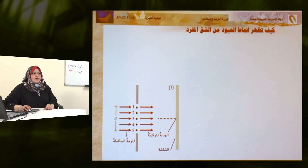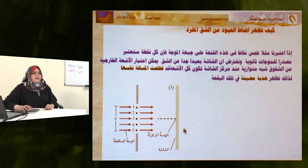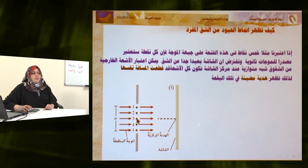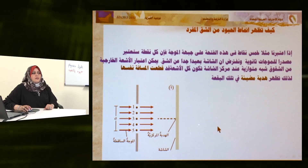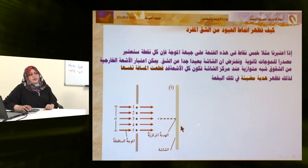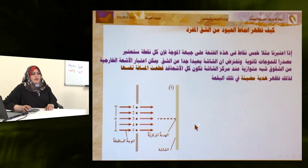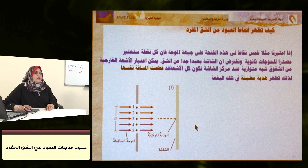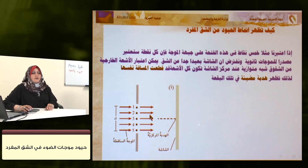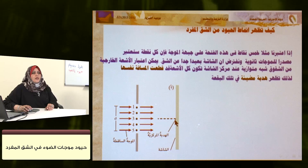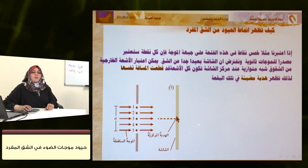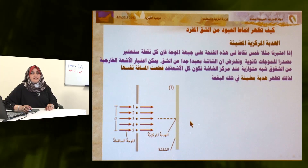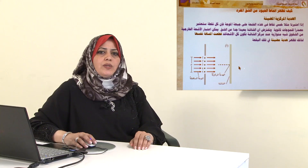كيف تظهر أنماط الحيود من الشق المفرد؟ نتخيل خمس نقاط في الشق المفرد، كل نقطة مصدر لموجات جيبية. الشاشة تبعد مسافة كبيرة عن الشق وبالتالي تكون الموجات شبه متوازية، وتقطع جميع الموجات نفس المسافة حتى تصل إلى الشاشة، فيتكون هناك هدب مضيء يسمى الهدب المركزي المضيء.